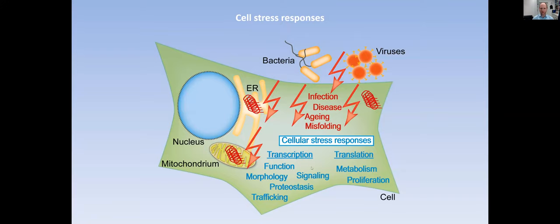If you look at the stress responses, they can come from really a number of different sources, and they result via transcription and translation in a large number of different outputs in the cell, whether it's cellular function, morphology, signaling, metabolism, proliferation, proteostasis, trafficking, and many more.